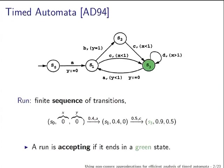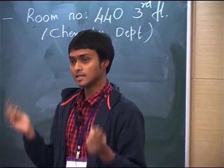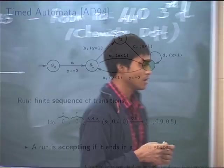You have a finite number of states — here S0, S1, S2, S3 are the states. You have a finite number of actions — here A, B, C, D are the actions. In addition, you have a finite number of clocks; here X and Y are the clocks. The clocks are assumed to have value 0 at time t=0 and they increase at the same rate as time progresses.